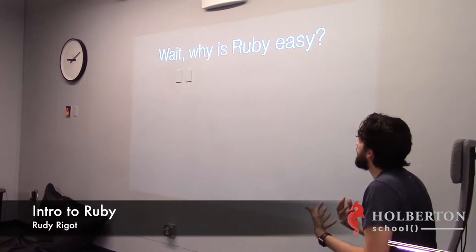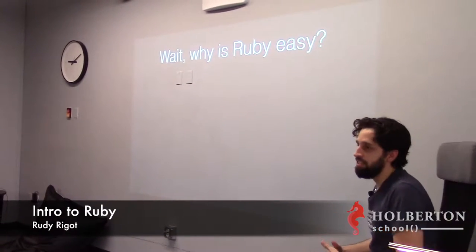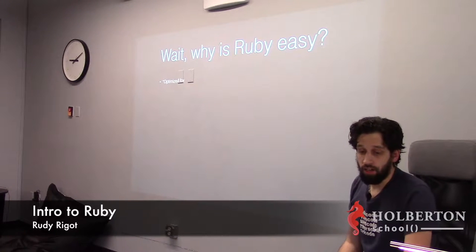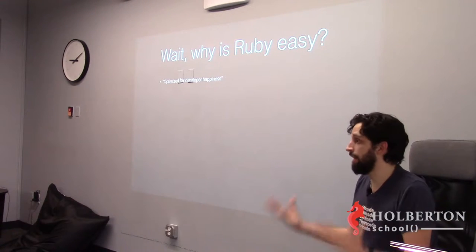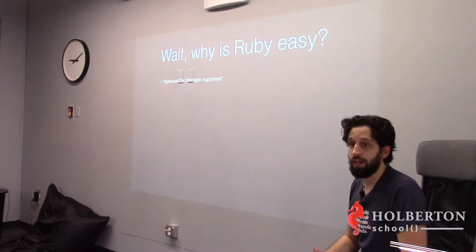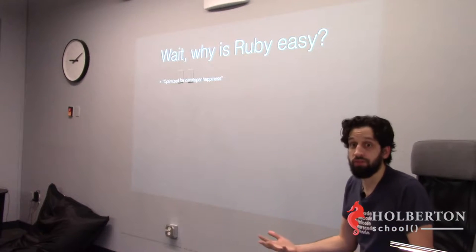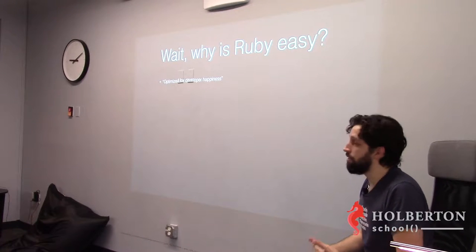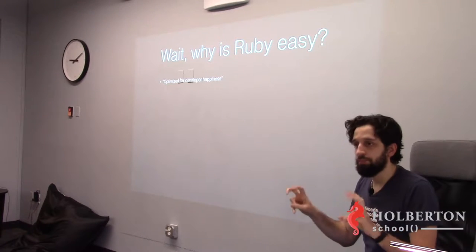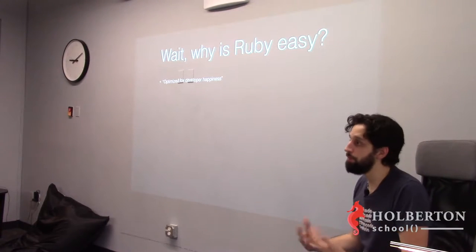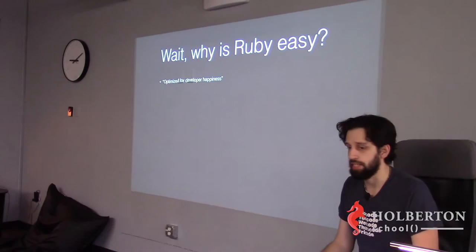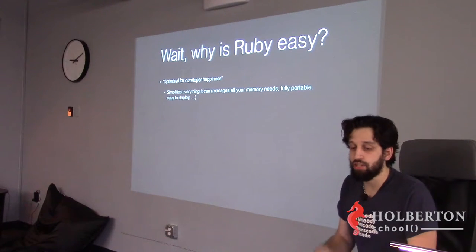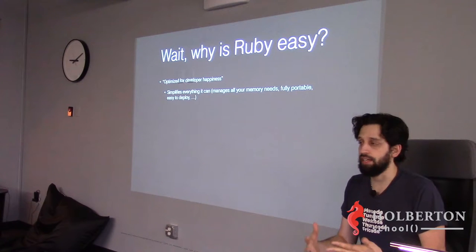So what is the cause that we say Ruby is easy to use and to learn? The causes are: first, it has two core values. The first value, defined by its creator Matz, is that it's optimized for developer happiness. It's really part of the Ruby doctrine.